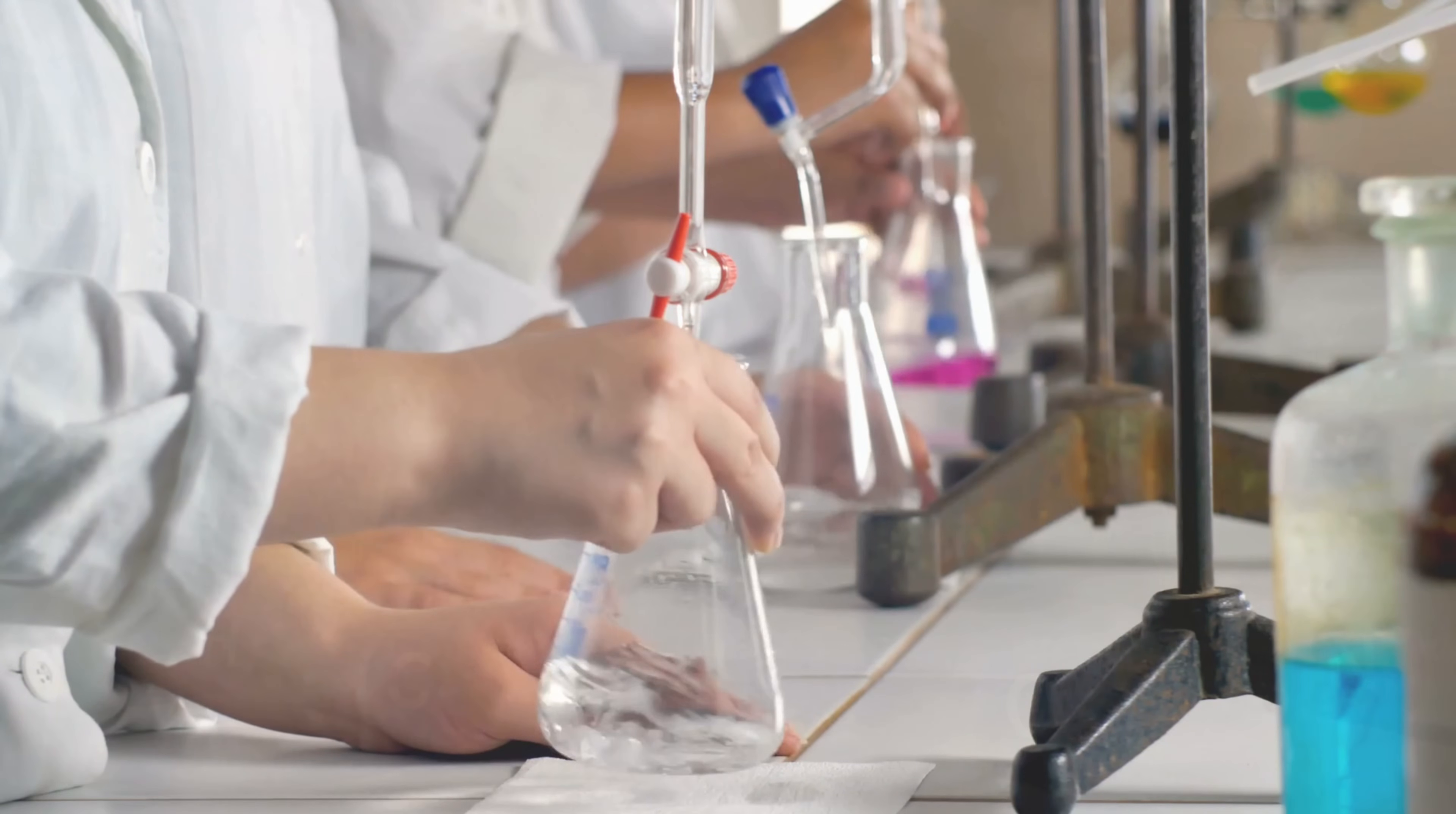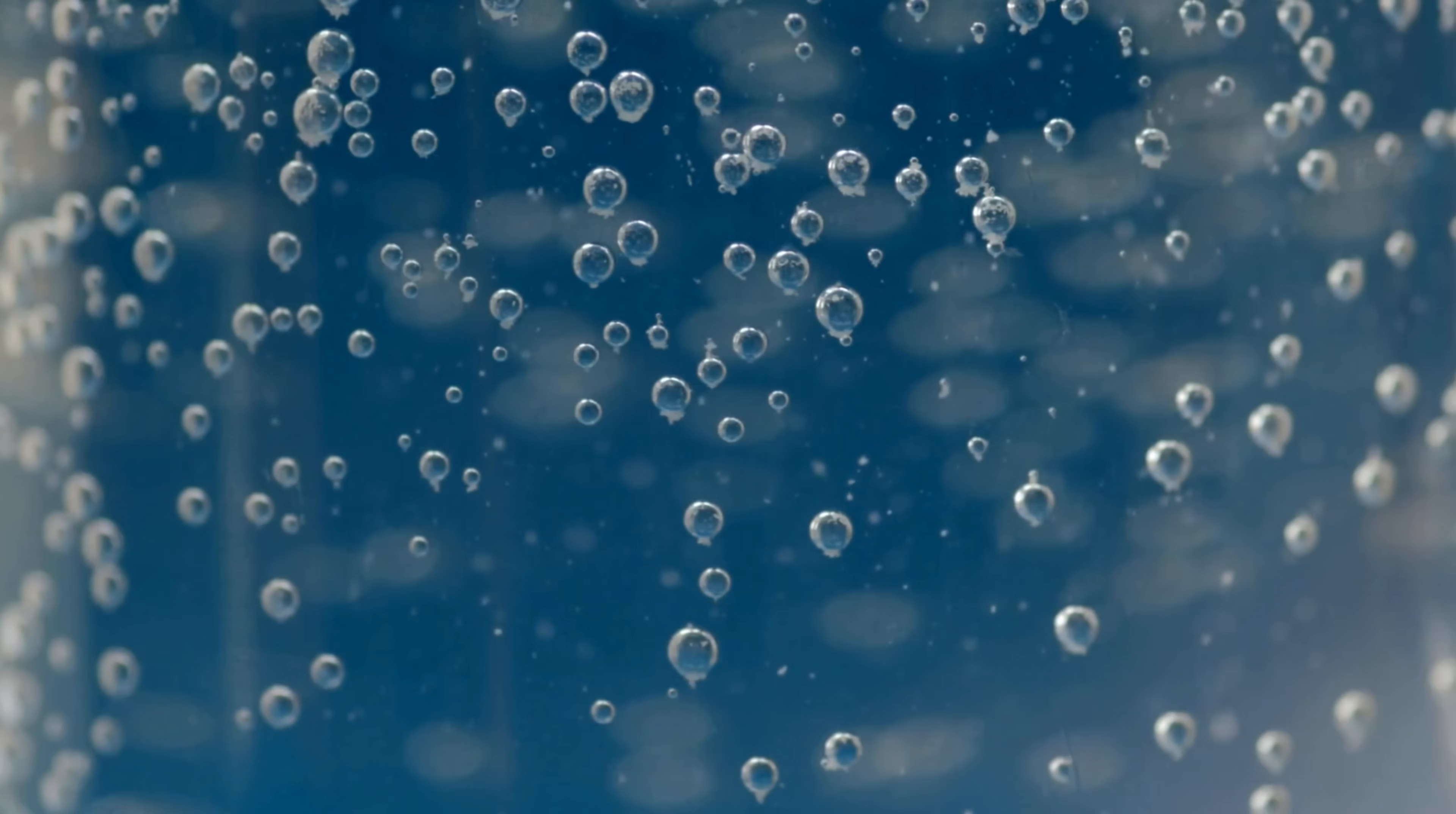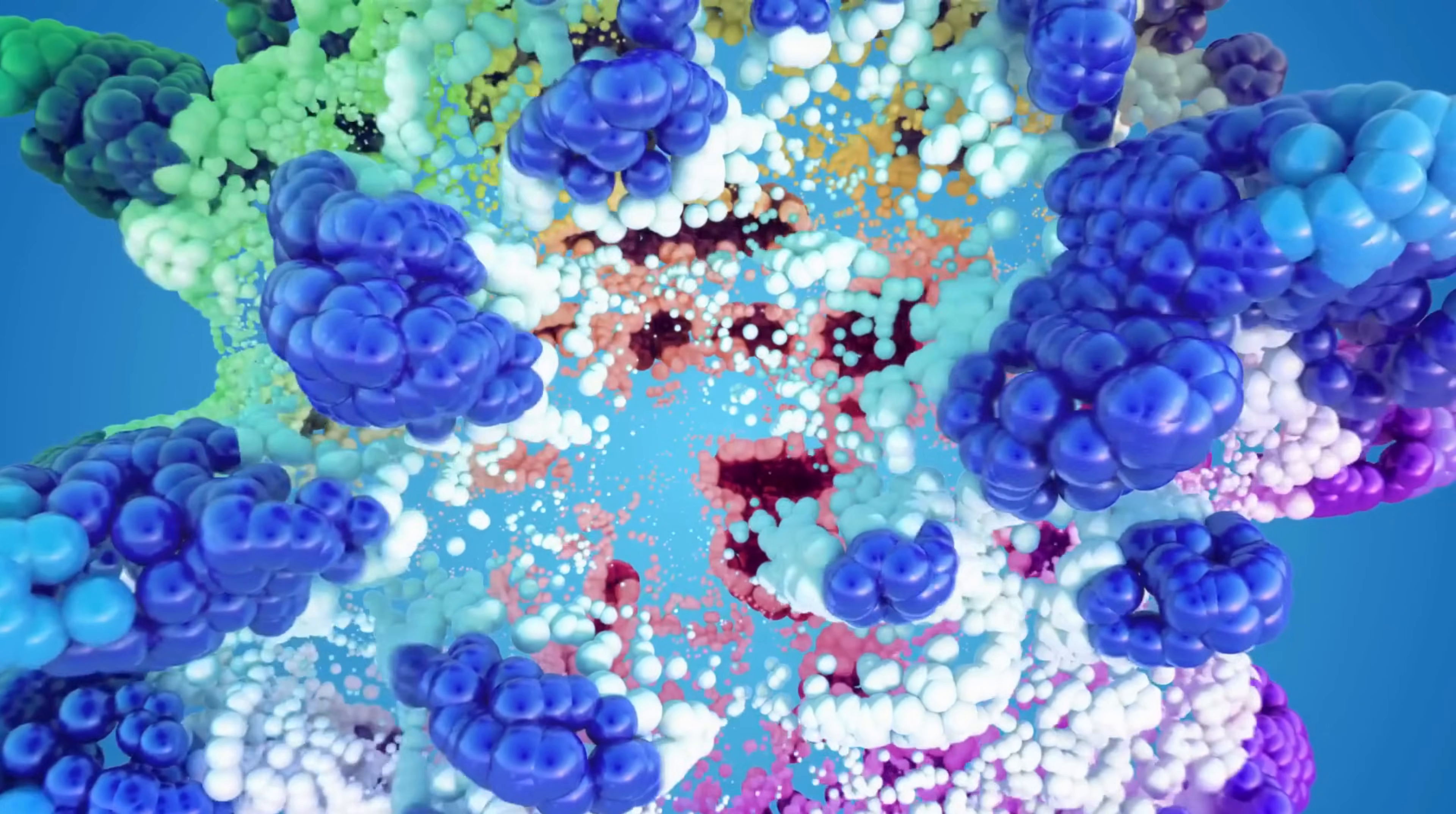The elements needed for life—carbon, hydrogen, nitrogen, and oxygen—were already present on Earth, but they were in simple forms. Somehow, they had to combine into more complex molecules to create the building blocks of life.